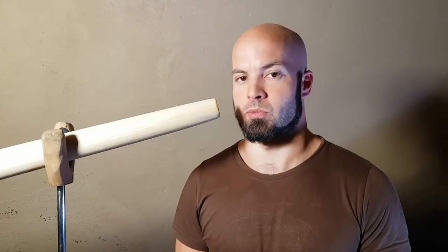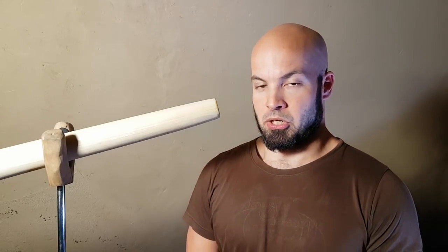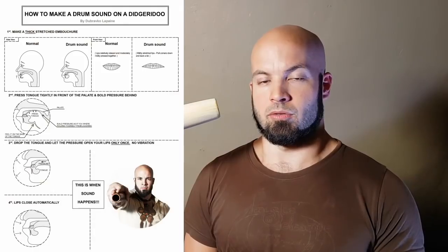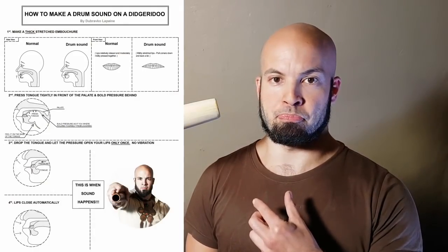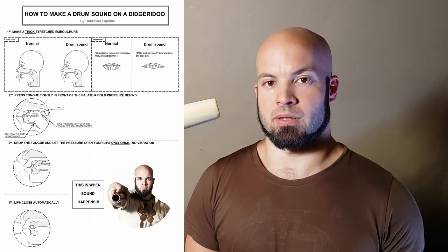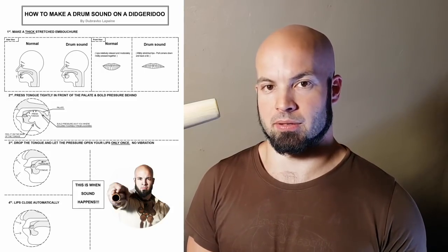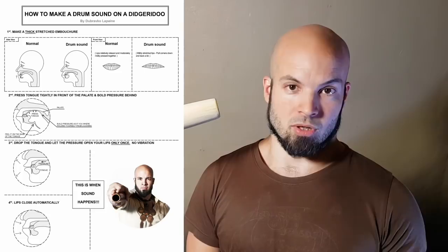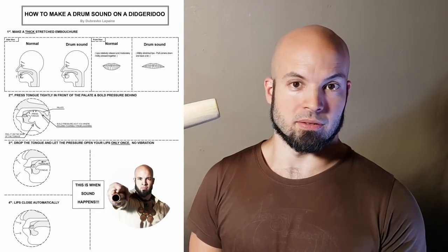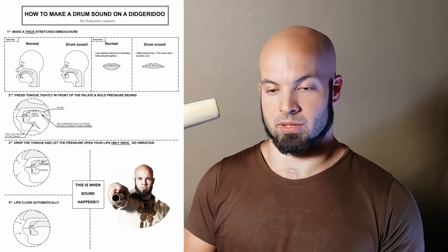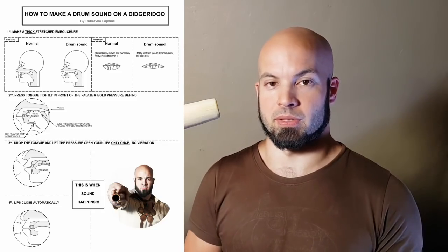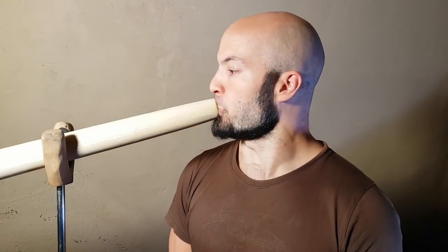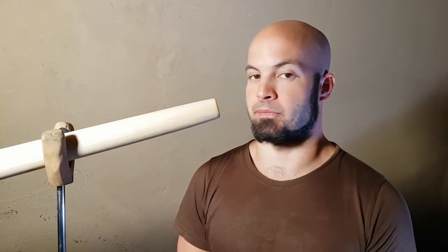When you press your sound more, it will also be much richer frequency wise. So again, to go through the steps: you need to make a thick contact with the lips, then stretch those lips to the sides and a little bit down, then press with your tongue against the palate and build the pressure behind the tongue. You do that pressure by pushing the air from the lungs. Then you drop the tongue suddenly and this air just goes out and breaks through that lip barrier that you created. The lips open and close once, and this is when sound happens. So it's very simple. Press a lot.